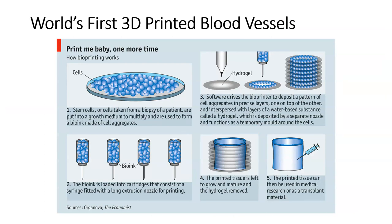Moving to the first 3D printed blood vessel: you can see the scaffolding here. They use what's called a hydrogel — the 3D printer injects cells in this hydrogel, which allows the cells to be built up layer by layer. The hydrogel is built up in a three-dimensional manner so that the cells can assume a blood vessel shape. That was really early bioprinting.